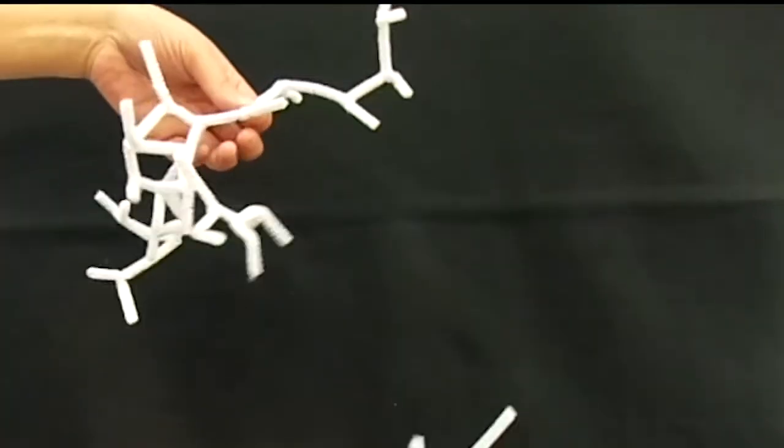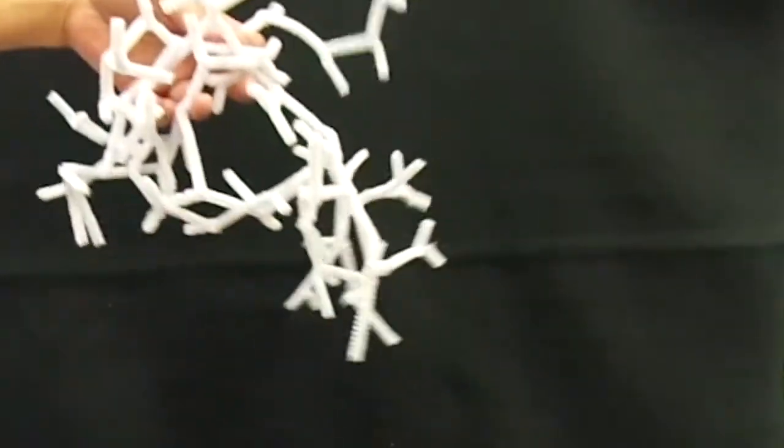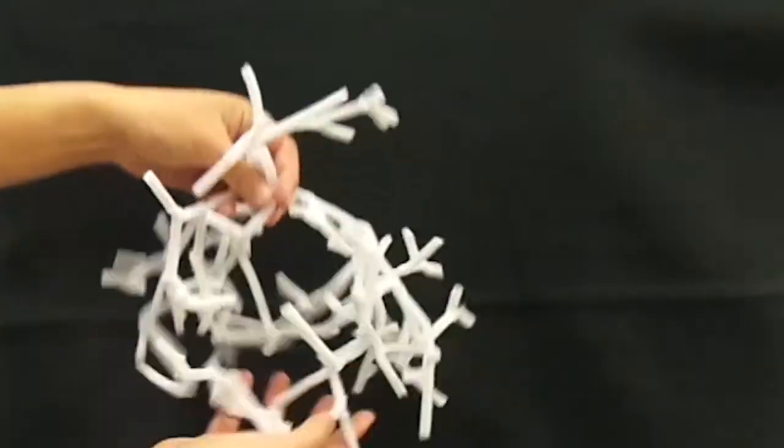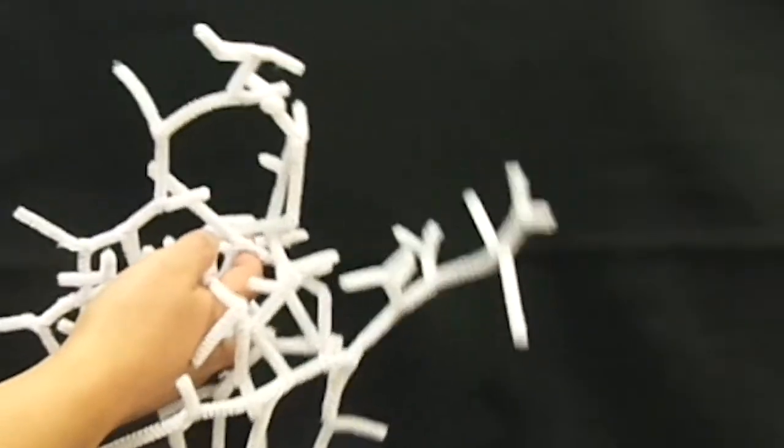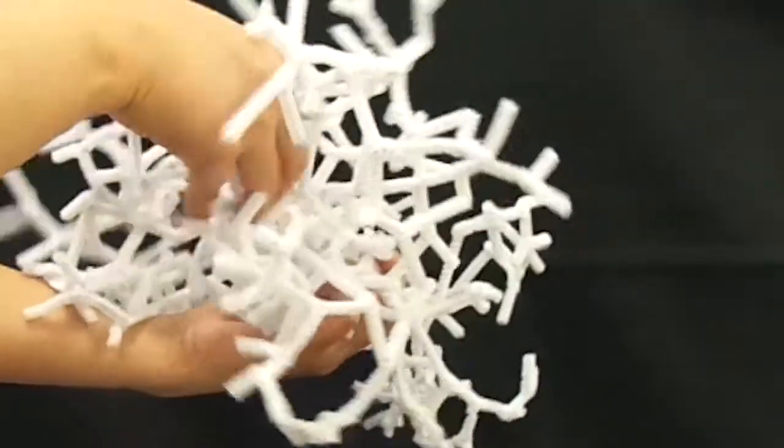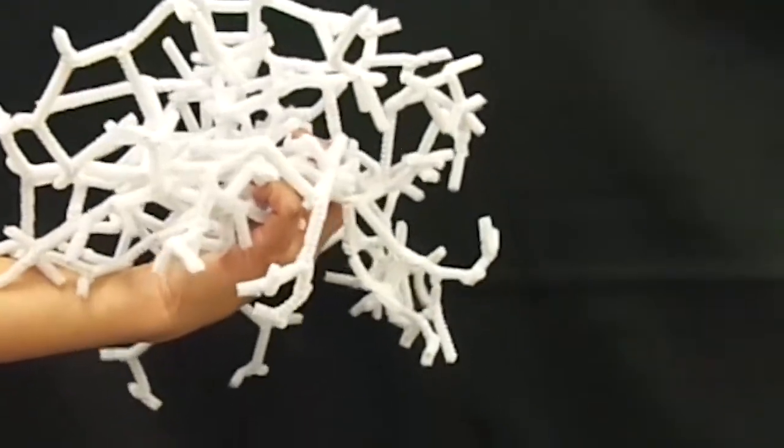So as you get more and more filaments floating, you end up with a large, loosely formed net of nocardia forms. And this is contributing to your foam layer.